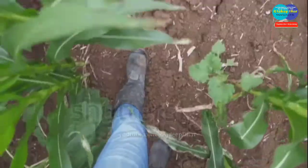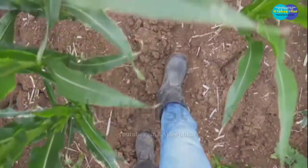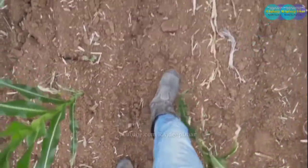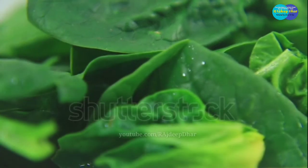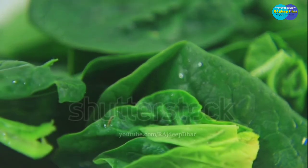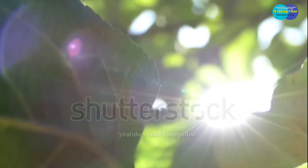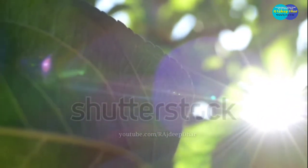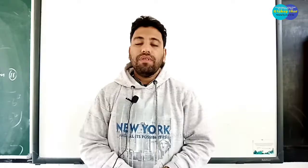Stem holds leaves in position and helps them to spread out as the stem and its branches grow. It bears flowers, buds, leaves and fruits. A leaf is a flat and green structure on a plant coming out from a node on the stem and always bearing a bud in its axil. Parts of a leaf are petiole, leaf lamina and veins.